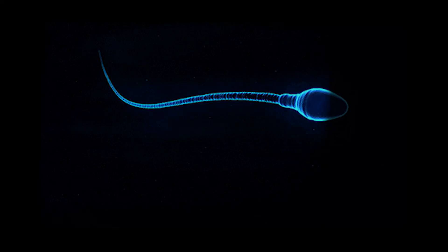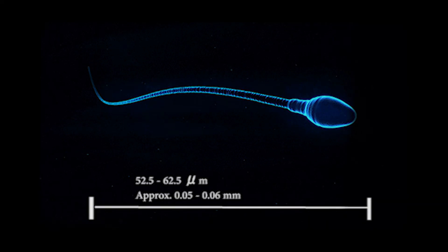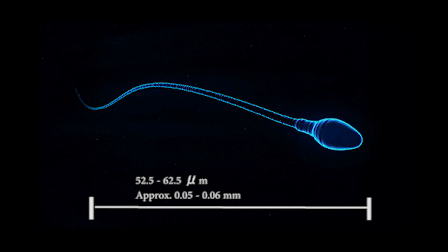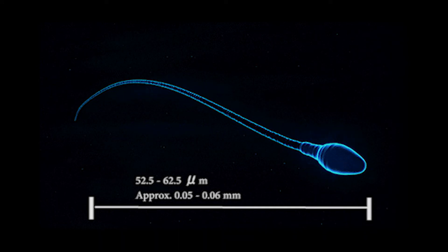In total, the length of a human sperm varies between 52.5 to 62.5 microns. So the total length is approximately 0.05 to 0.06 millimeter.